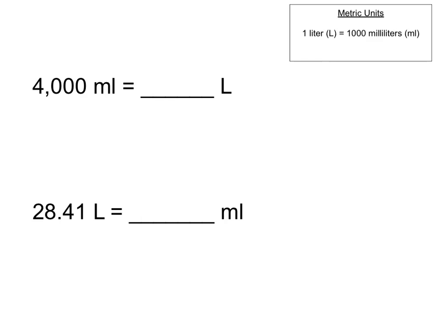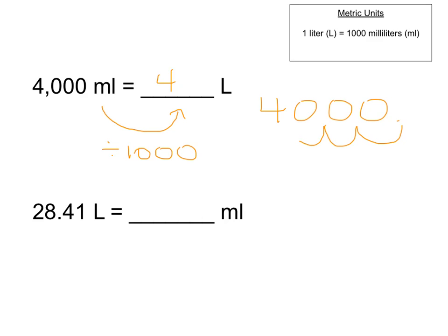Here's a problem to get started: 4,000 milliliters equals some number of liters. Knowing that milliliters is the smaller unit compared to liters, which is the larger unit, that means we're going to need to divide by 1,000, which is the total number of milliliters in a liter. 4,000 divided by 1,000 is 4. I could also think of it as taking 4,000 and moving the decimal point to the left three times, because I'm dividing by 1,000, which is made up of three groups of 10.